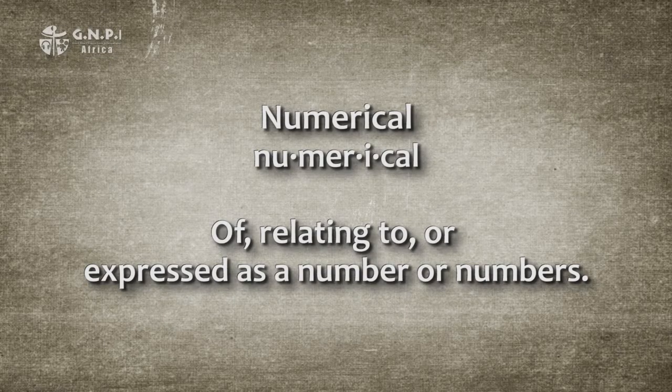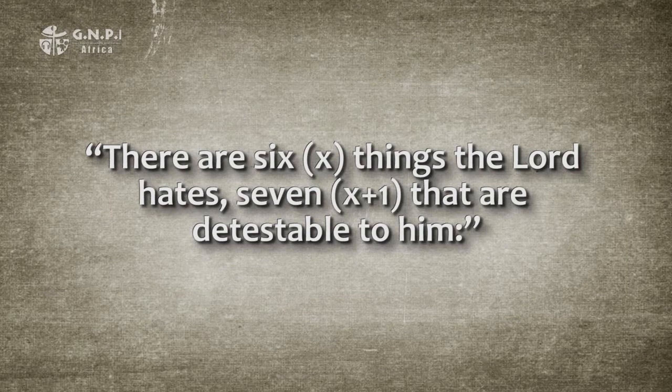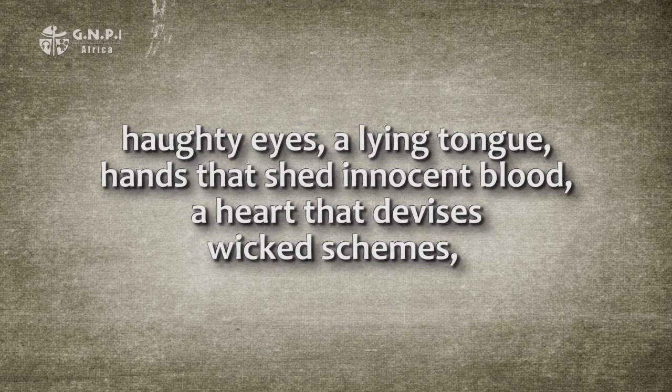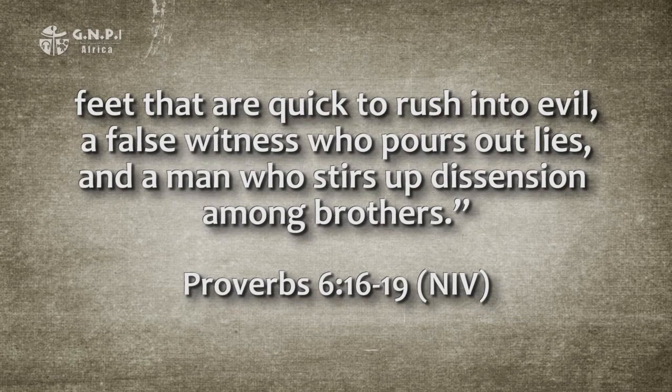The eighth category of proverbs is numerical sayings. There are seven numerical sayings in the book of Proverbs — one is found in chapter 6 verses 16 to 19, and the other six are grouped in chapter 30. These proverbs use a Hebraic list of observations with a formula of X and X plus 1. For example: 'There are six things the Lord hates, seven that are detestable to Him: haughty eyes, a lying tongue, hands that shed innocent blood, a heart that devises wicked schemes, feet that are quick to rush into evil, a false witness who pours out lies, and a man who stirs up dissension among brothers' — chapter 6 verses 16 to 19. Numerical sayings provide a list of items that fulfill the characteristic or description presented at the beginning. Often the list would at first glance not appear connected in any way.